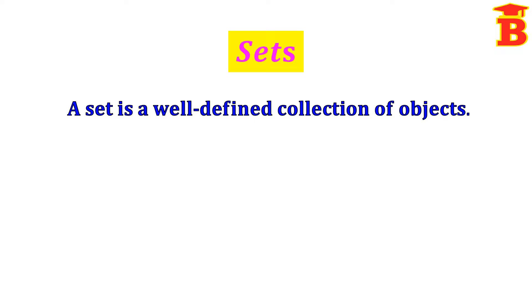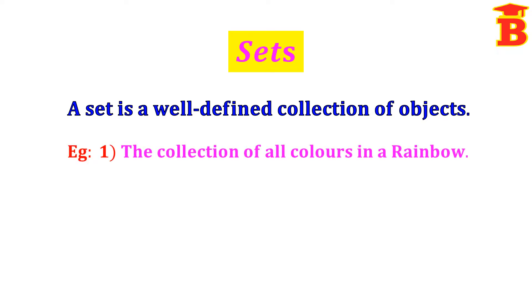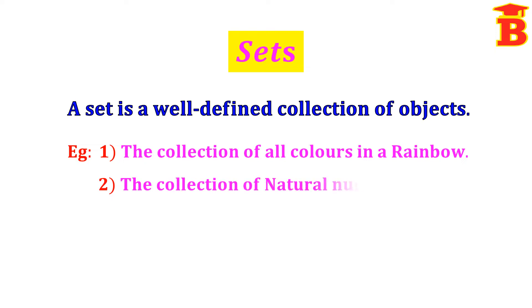For example, the collection of all colors in a rainbow. We know the colors in a rainbow — it is a well defined one, so this is a set. The next example is the collection of natural numbers. We know the natural numbers are 1, 2, 3, 4, etc. So it is also a well defined one, therefore it is a set.